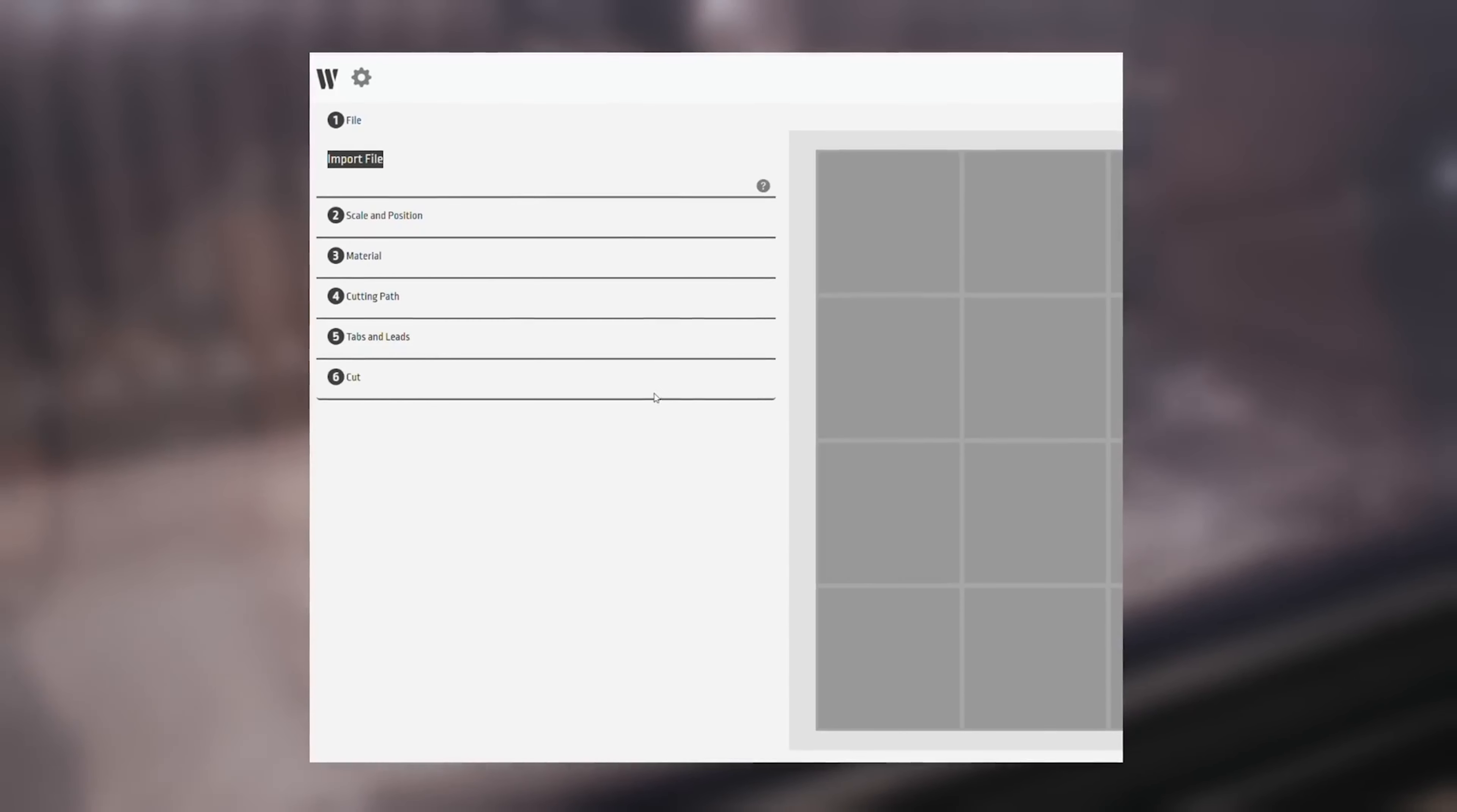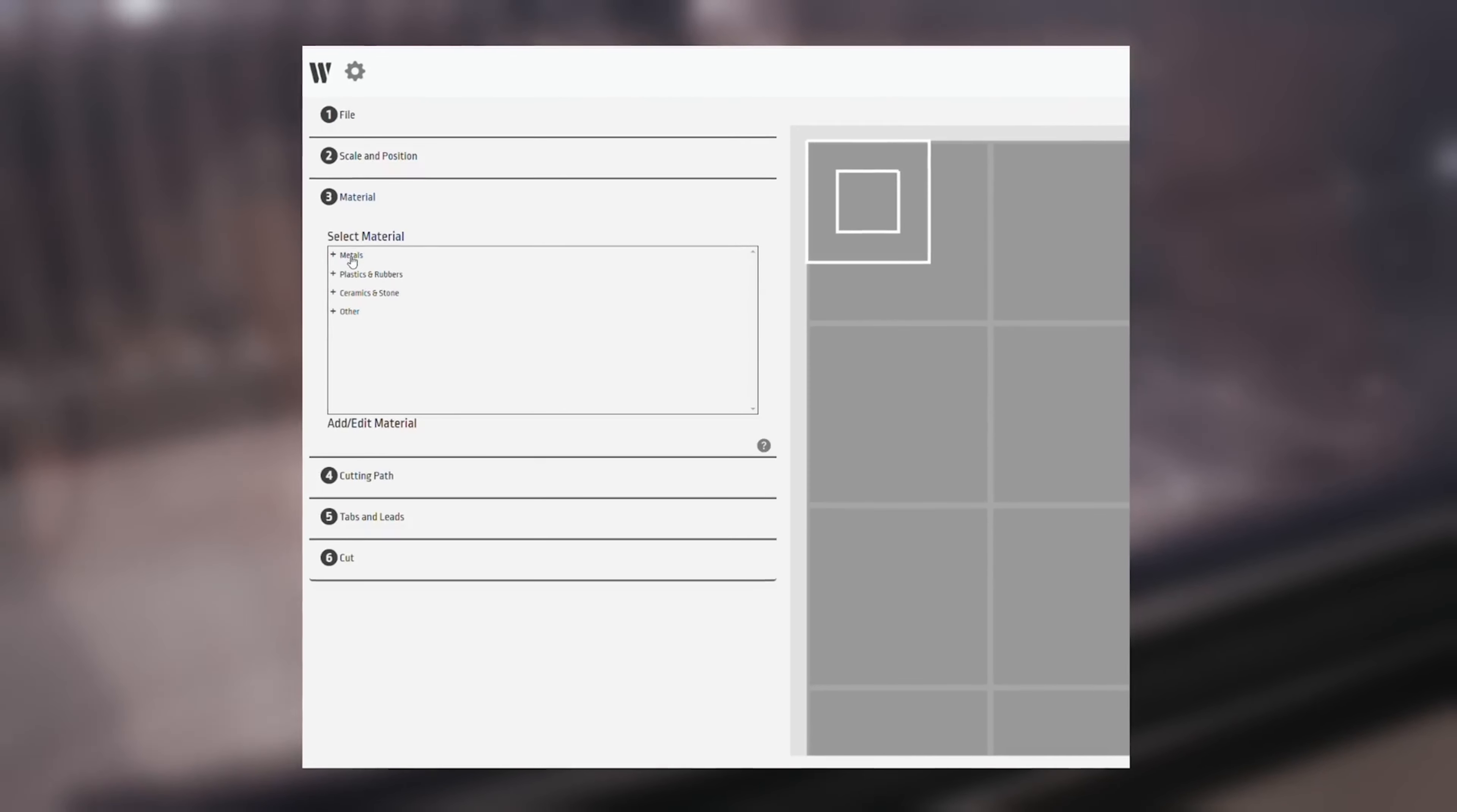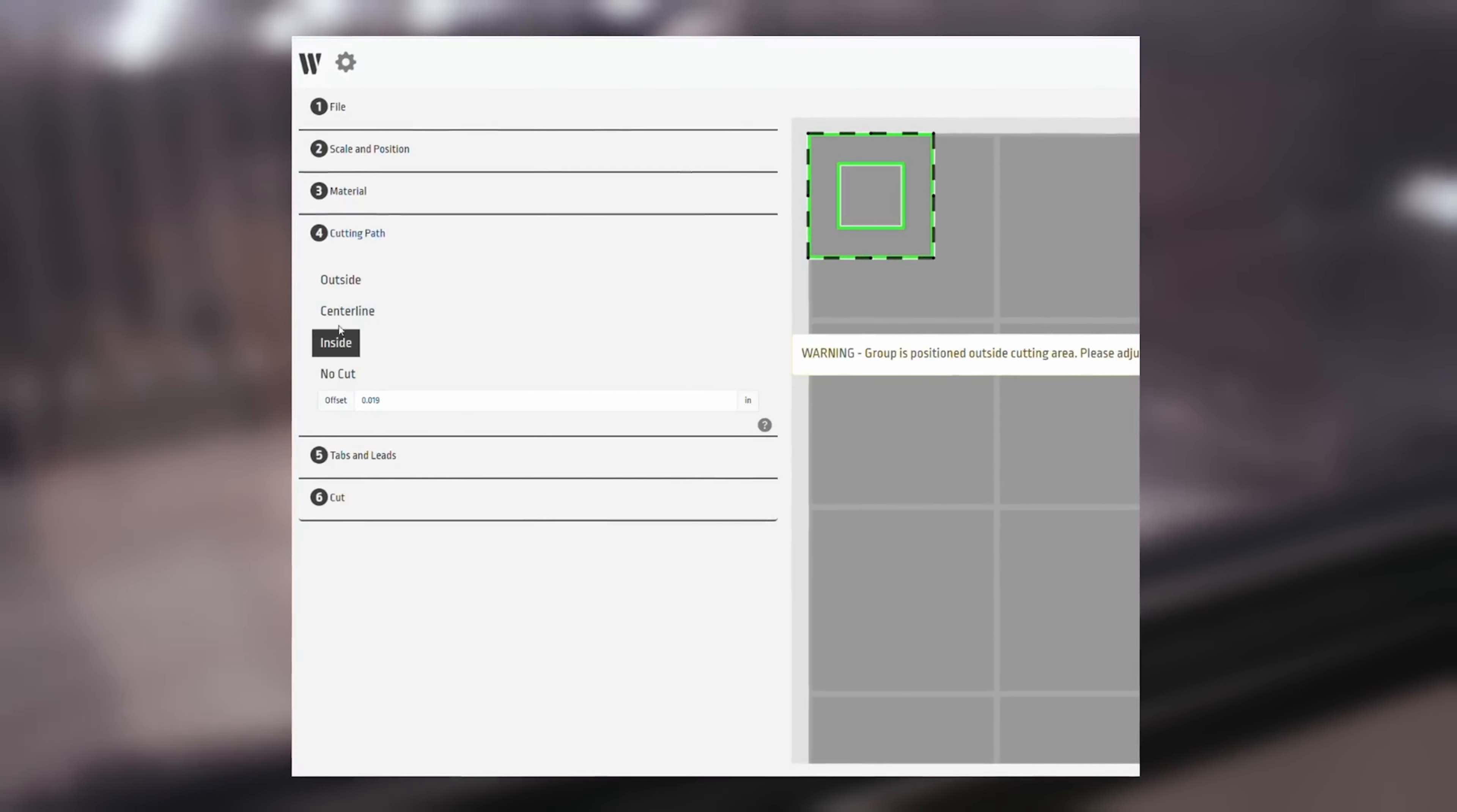First thing we need to do is select a file and then we can scale and position our part in the software. And then we can go down and select our material thickness. And Wazer Cam has an assortment of profiles already loaded up. Or you can create your own.